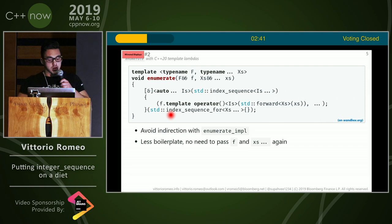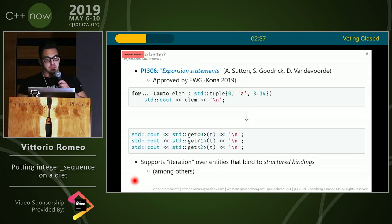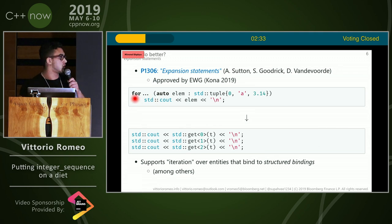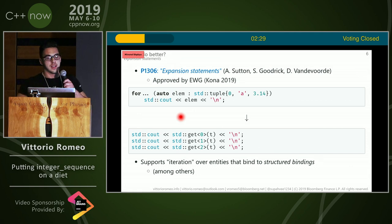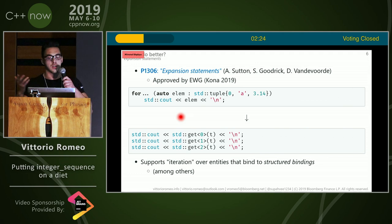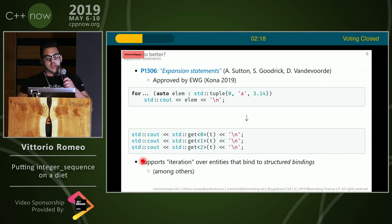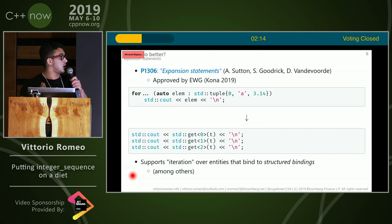This is a working solution, but can we do better in the future? There's a proposal called expansion statements. What it does is basically: it is for... — it takes something that can be destructured with structured bindings, and then it copy-pastes the body of this for loop N times for each element inside that thing. For a tuple, it's going to expand to something like std::out of get<0>, get<1>, get<2>. So if anything binds to structured bindings, we can use this expansion statement with it. It has also been approved by EWG in Kona, so we're going to have that in C++20, I think.